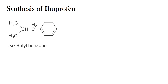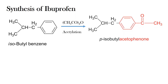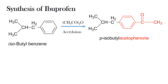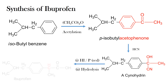Ibuprofen is synthesized from isobutyl benzene by acetylation. The acetylation is carried out through acetic anhydride, and the resulting product is para-isobutyl acetophenone. Para-isobutyl acetophenone is then treated with HCN to obtain a corresponding cyanohydrin. The cyanohydrin is then heated with hydrogen iodide in the presence of red phosphorus, followed by hydrolysis. The resulting product is Ibuprofen.